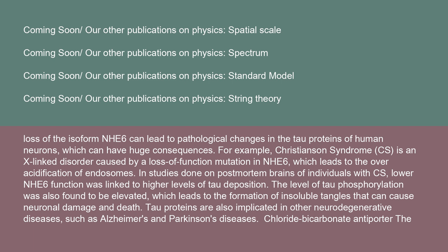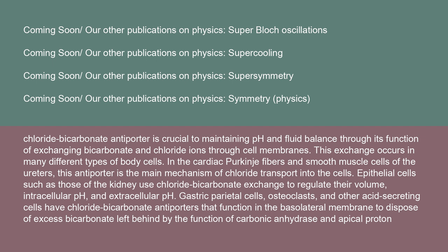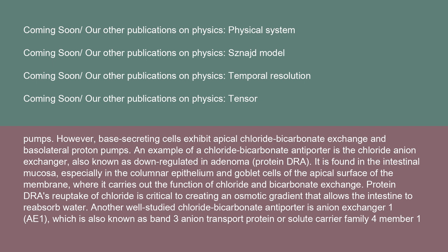The chloride-bicarbonate antiporter is crucial to maintaining pH and fluid balance through its function of exchanging bicarbonate and chloride ions through cell membranes. This exchange occurs in many different body cell types, including cardiac Purkinje fibers and smooth muscle cells of the ureters, where it is the main mechanism of chloride transport into cells. Epithelial cells, such as those of the kidney, use chloride-bicarbonate exchange to regulate their volume, intracellular pH, and extracellular pH. Gastric parietal cells, osteoclasts, and other acid-secreting cells have chloride-bicarbonate antiporters functioning in the basolateral membrane to dispose of excess bicarbonate, while base-secreting cells exhibit apical chloride-bicarbonate exchange.